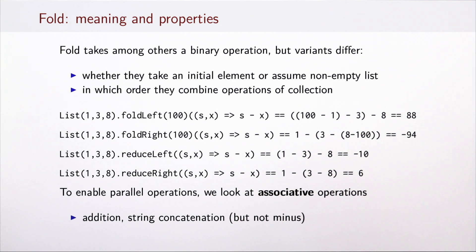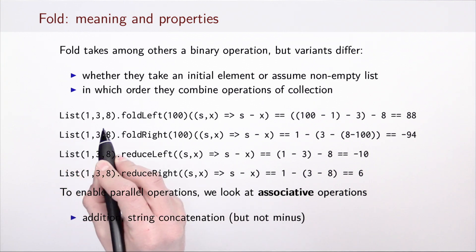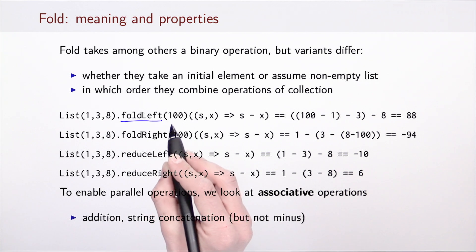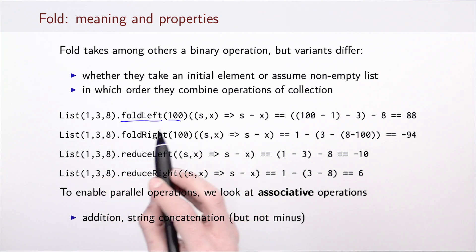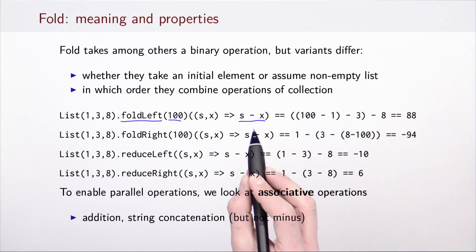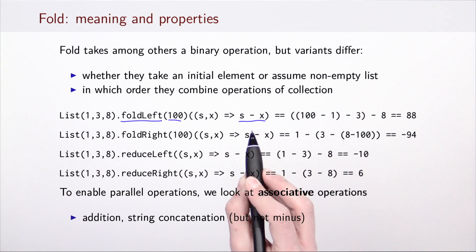It is a general property of fold that it takes a binary operation as input and possibly some additional parameters. Variants of fold differ in whether they take an initial element or assume a non-empty collection, and also in the order in which they combine elements. Fold left combines elements starting from the left and takes an initial element. If the list is 1, 3, 8 and the initial element is 100, we apply the operation minus.